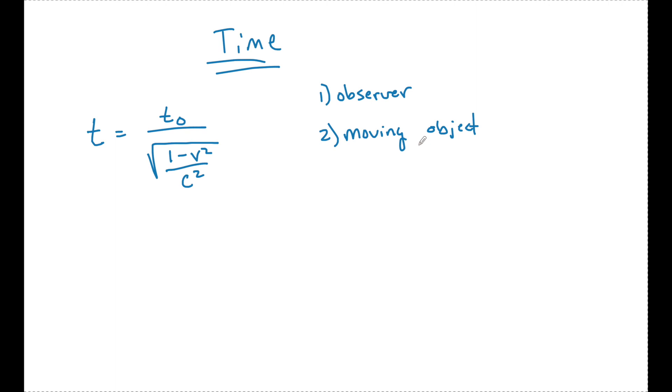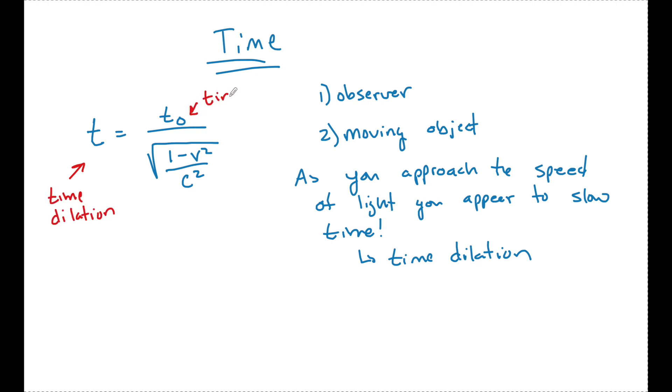Now the observer will observe their clock looking exactly the same. Nothing changed. It's running as normal. But as the moving object approaches the speed of light, its clock will appear to run slower. This is called time dilation. So let's break down this formula using that vocabulary. This is the time dilation. This is the time of the observer, time on observer's clock. So this one is just a normal running time, normal running clock.